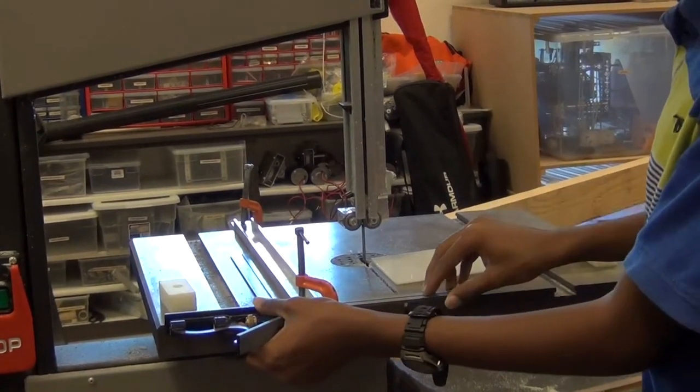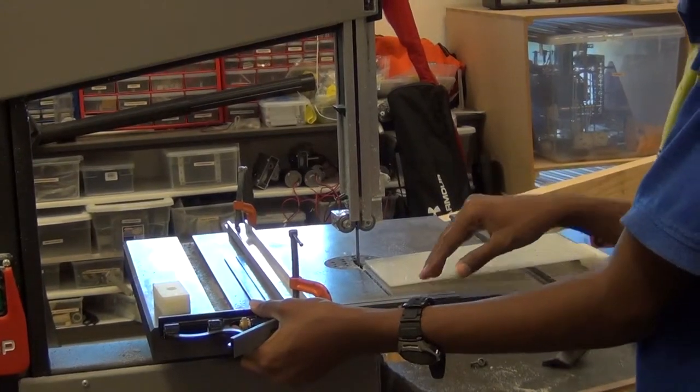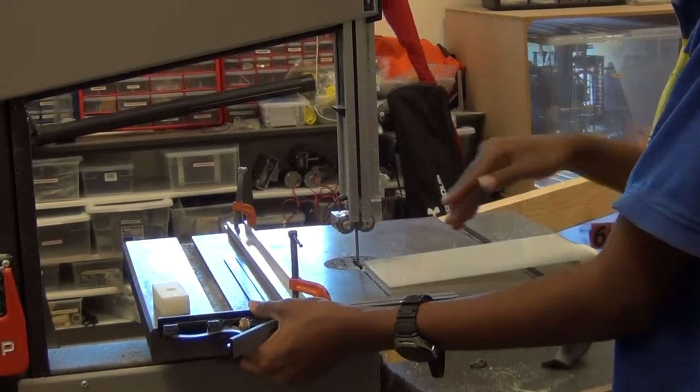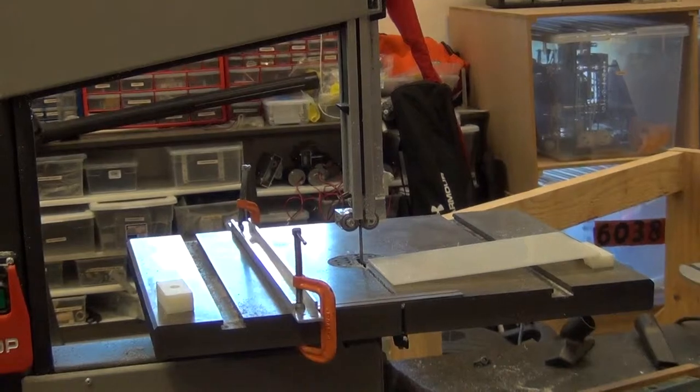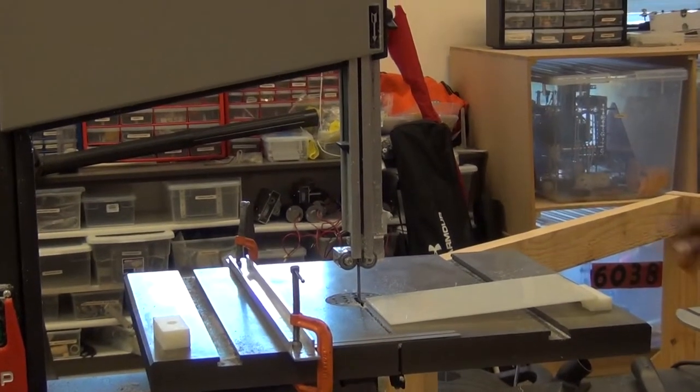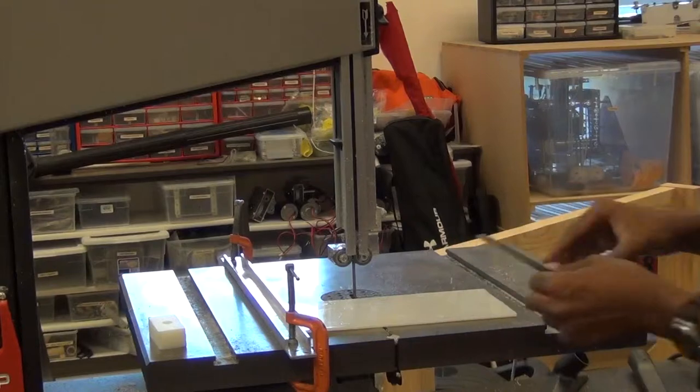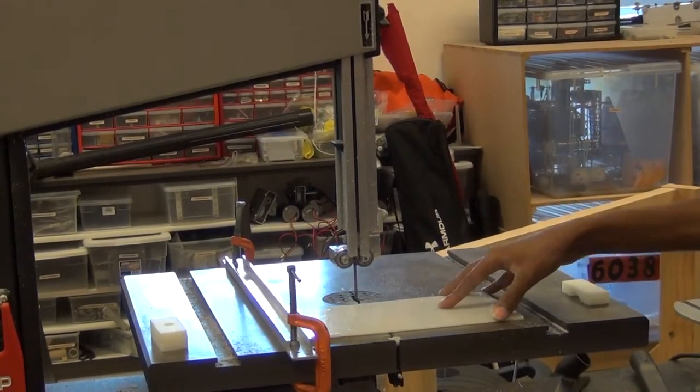Okay, so now the fence is three and a half inches away from the blade and it is parallel to the blade as well. So now we can push the piece against the blade and make a cut.